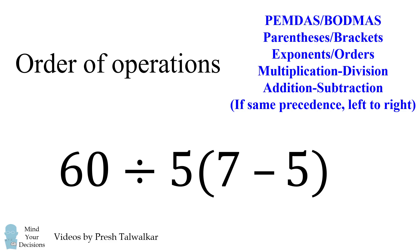It refers to the precedence of operations. We first have parentheses brackets, then exponents orders, then multiplication division, and finally addition subtraction. If you have multiple operations of the same precedence, you should evaluate them from left to right. So in this expression, we have some parentheses, so we should evaluate 7 minus 5 first. This is a non-controversial part of the question, and this is equal to 2.